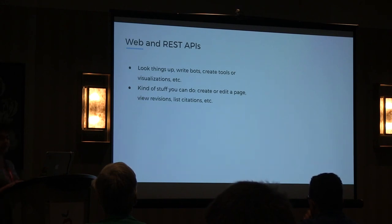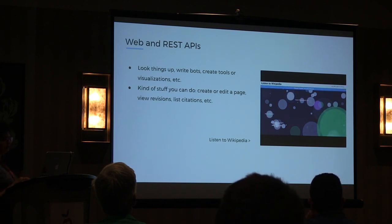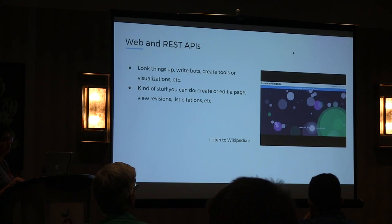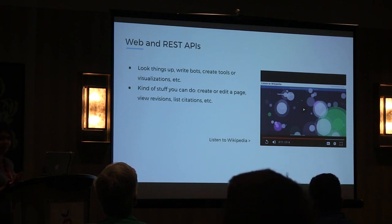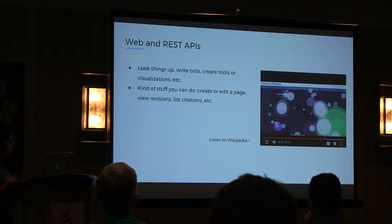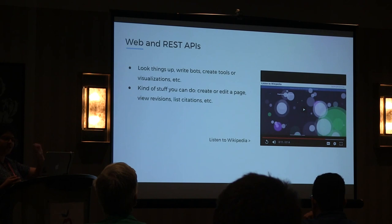An example of this is the Listen to Wikipedia project. This project leverages our web APIs — they use the recent changes web API to visualize real-time edits happening on Wikipedia. The large circles shown represent large chunks of edits made, and small circles represent smaller edits.